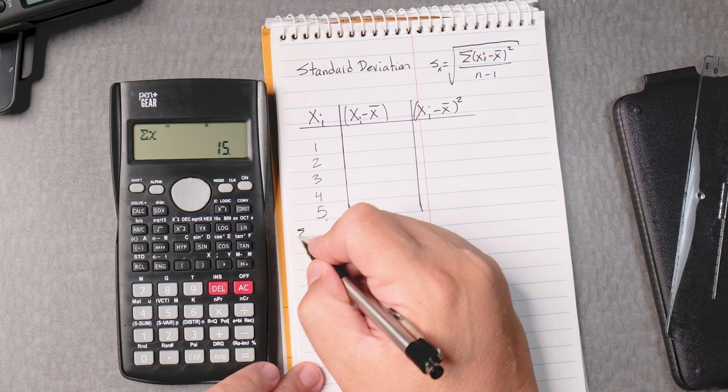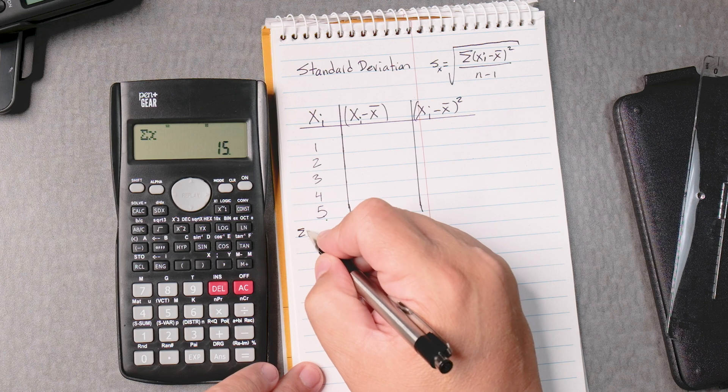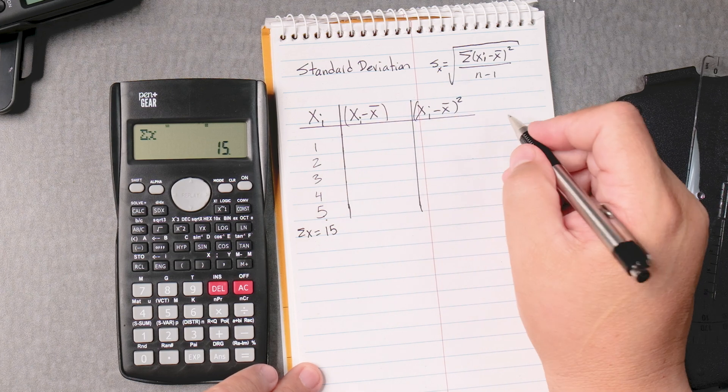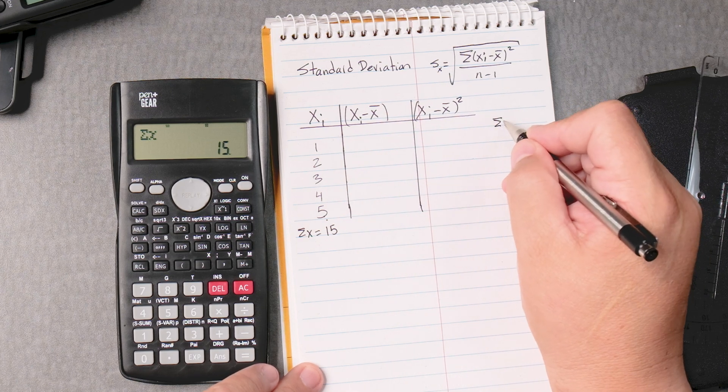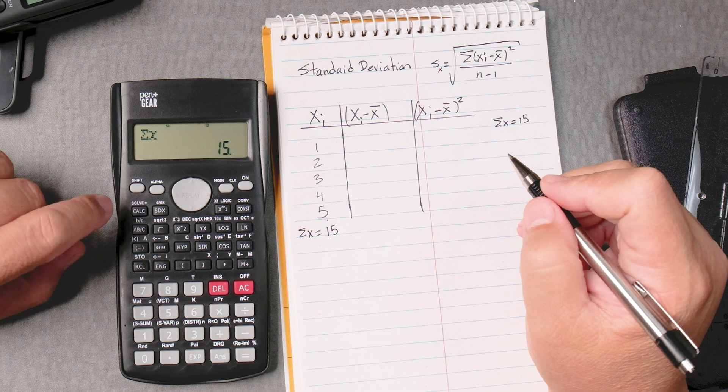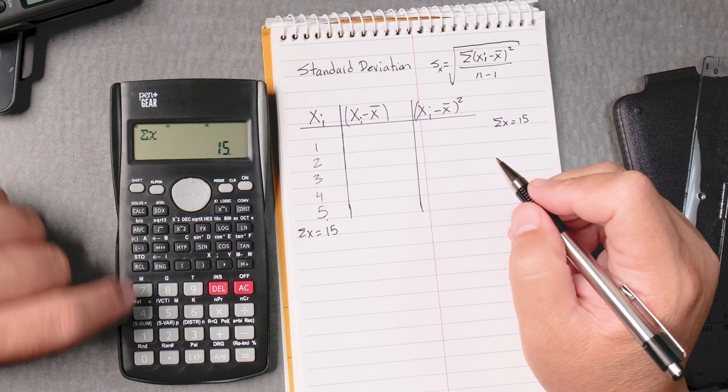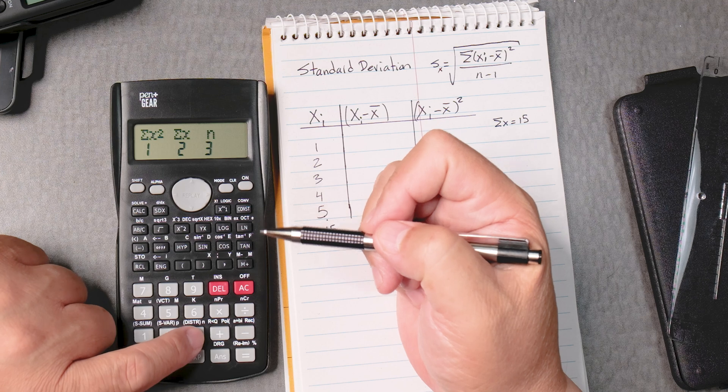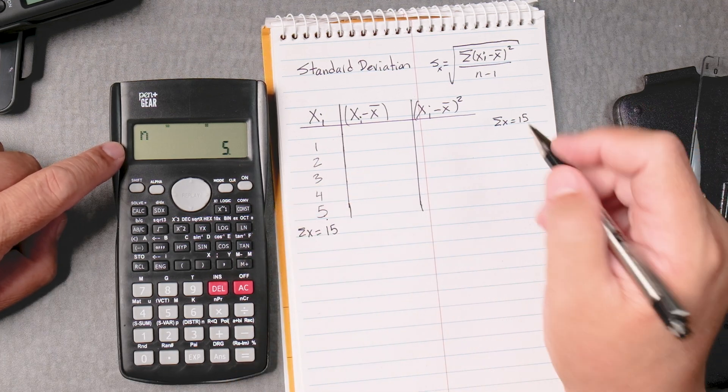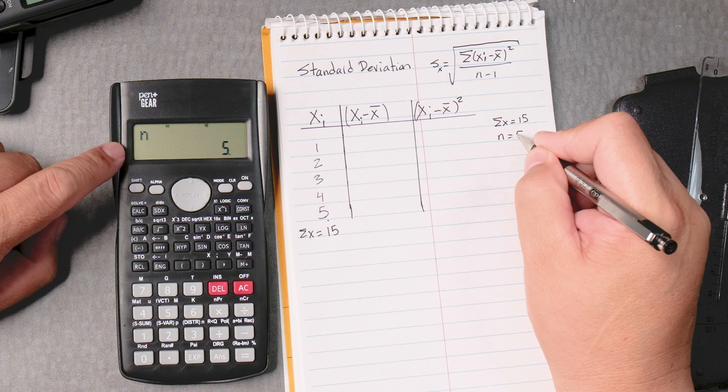So here, the sum of x equals 15. That's the sum of this, so we're going to use that definitely for our mean. If we press shift 1 again, we can go to number 3. If we press 3 and then equals, it says we have 5 data points, which is true.